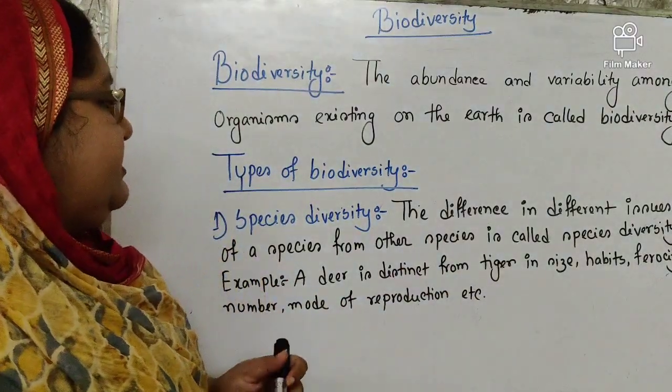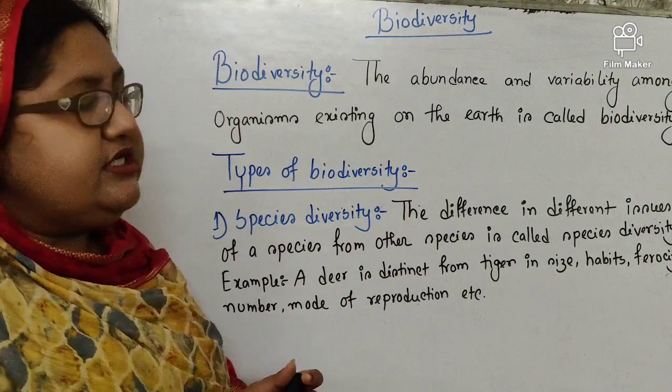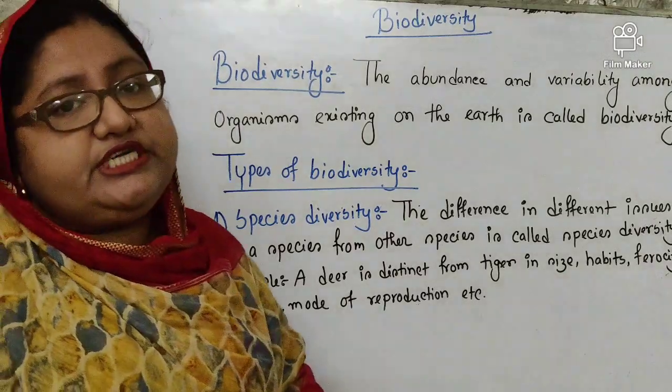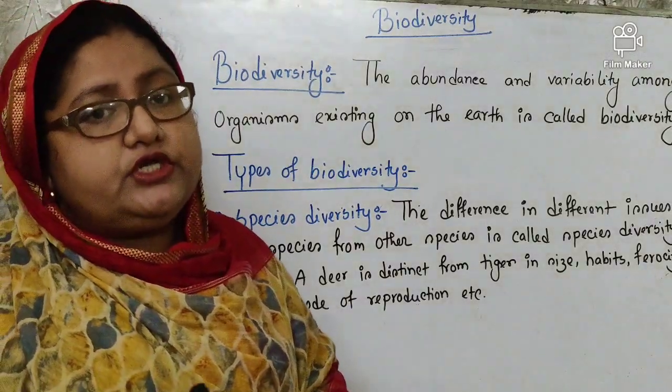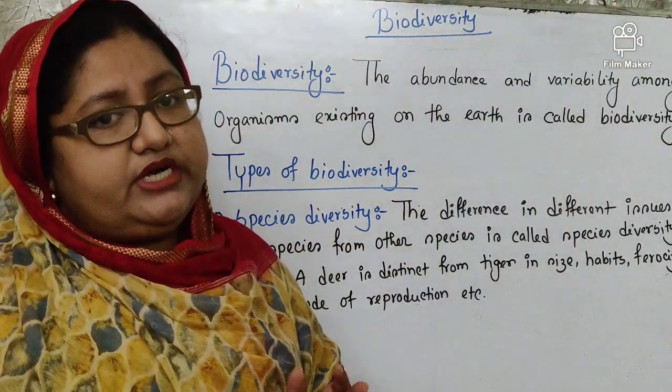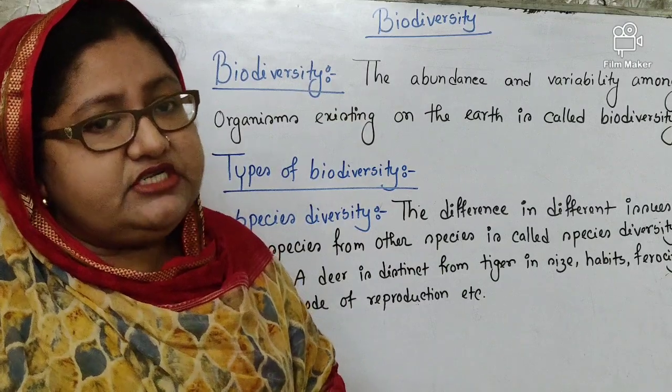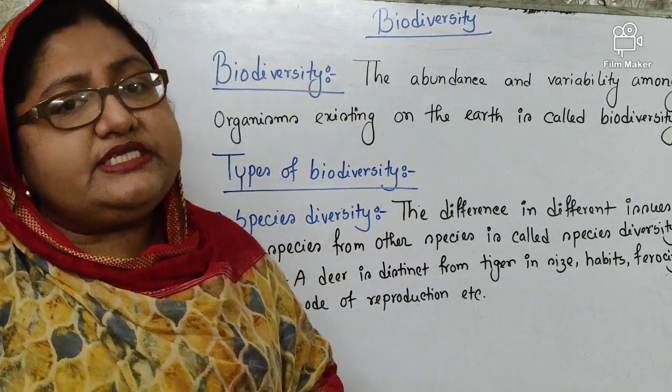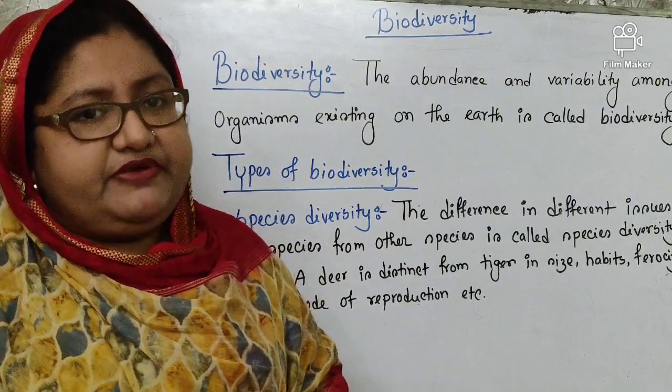Now the types of biodiversity. Biodiversity is of three types: first, species diversity; second, genetic diversity; and third, ecosystem diversity.